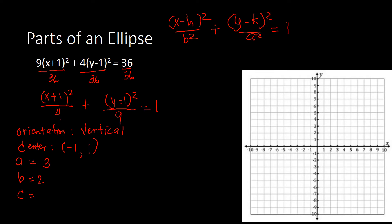Now we find c. c equals the square root of a squared minus b squared. So c equals square root of 9 minus 4, which is square root of 5. Simplifying, square root of 5 is approximately 2.24. So c is 2.24.